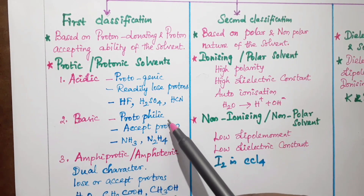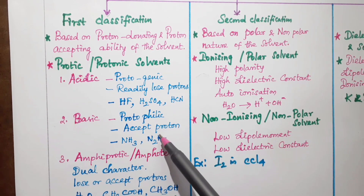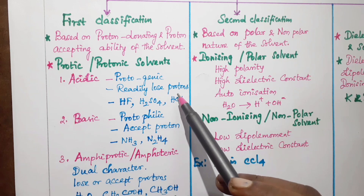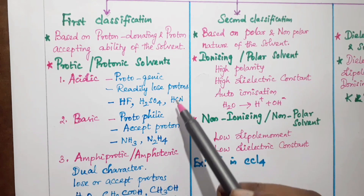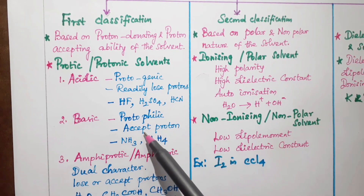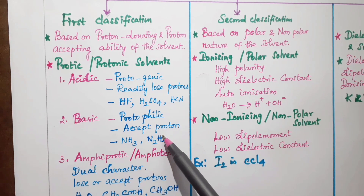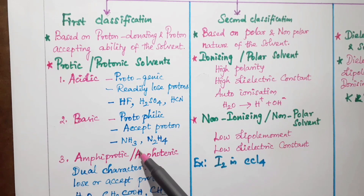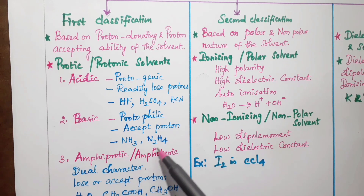Basic solvents are protophilic — they accept protons. Examples of basic solvents include ammonia and hydrazine.